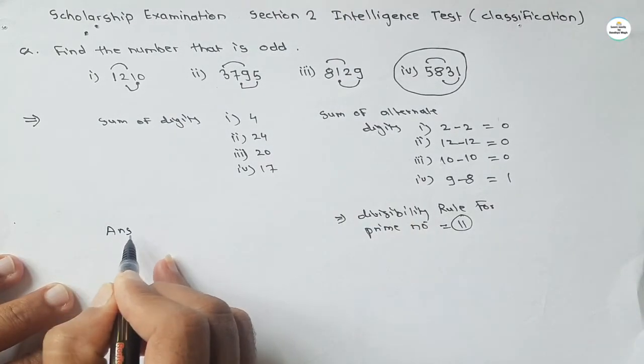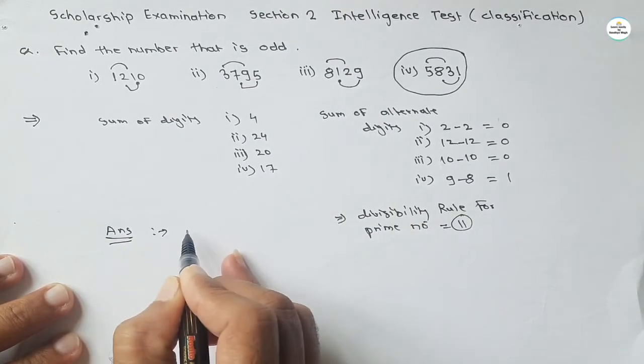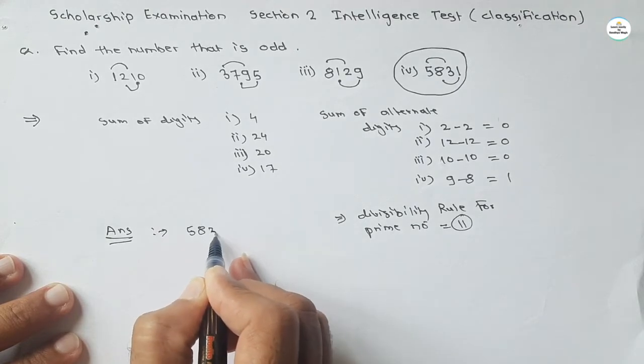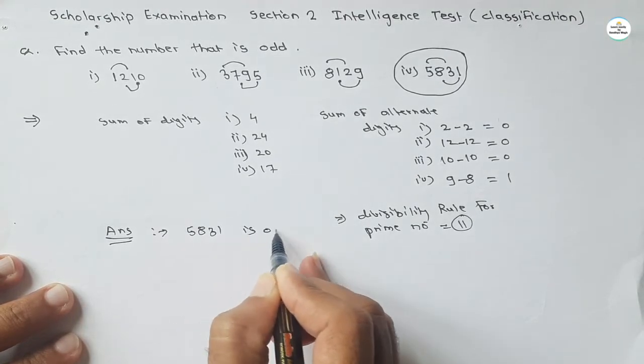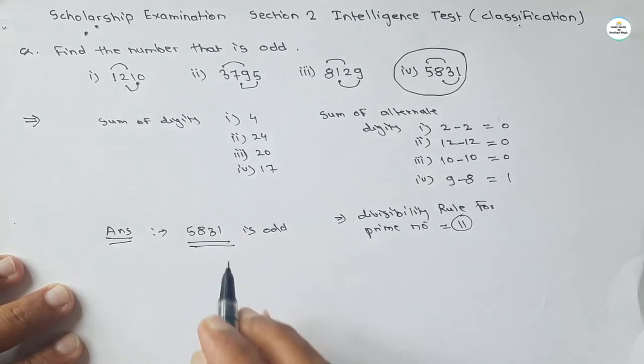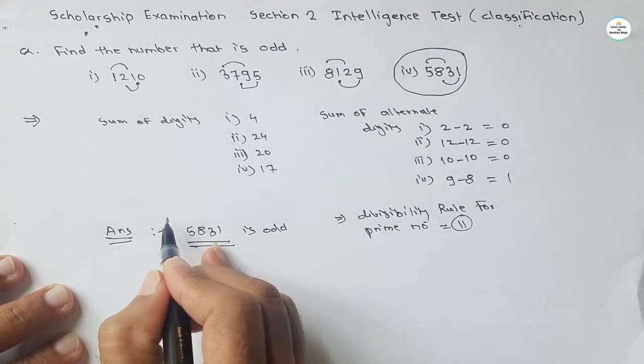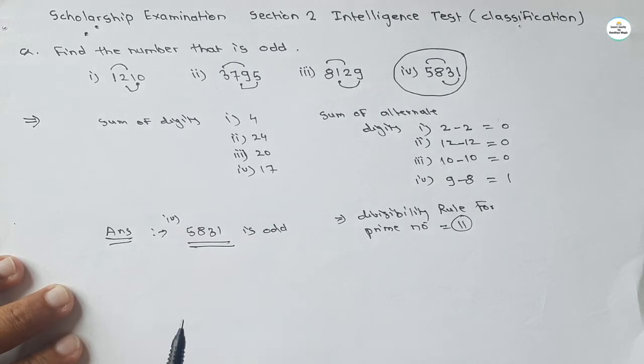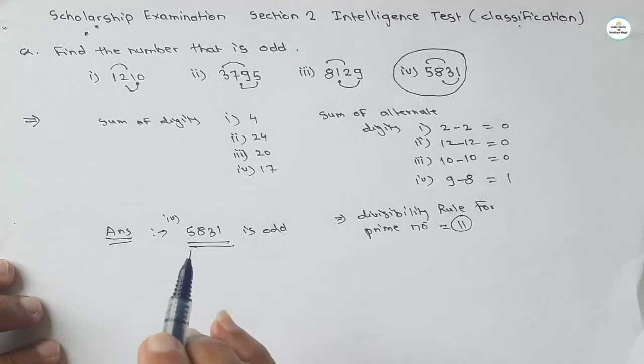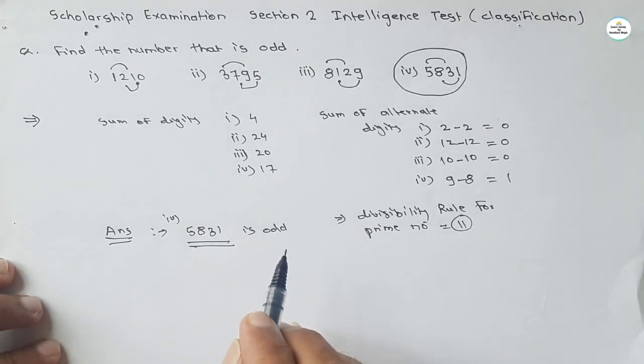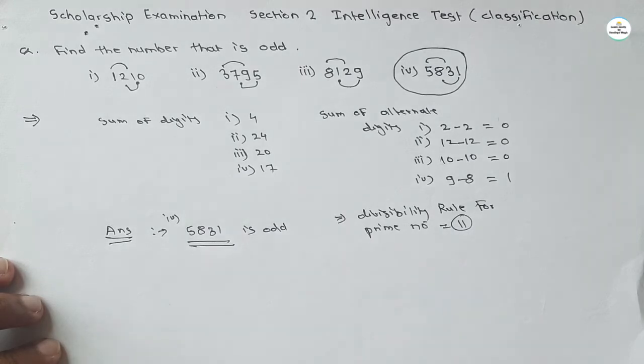So what will is our answer? Our answer is number 5831 is odd number. Means number fourth option, fourth option is odd one.